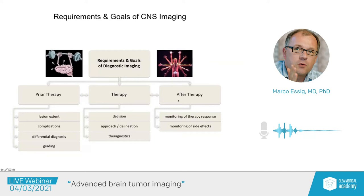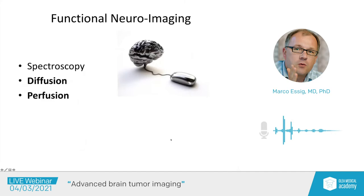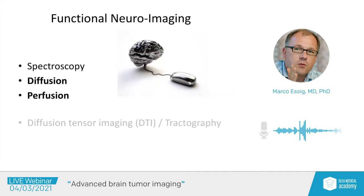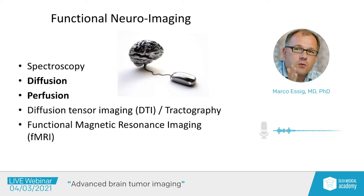If the patient has been treated and is on follow-up, we use imaging for follow-up of therapy response and to identify and monitor treatment-related side effects. It's very complex, and we have developed over the last few years a number of functional imaging tools to improve those diagnostic requirements in brain tumor imaging. We have introduced MR spectroscopy, diffusion and diffusion tensor imaging, and brain perfusion imaging, which is included in almost all of our brain tumor protocols.